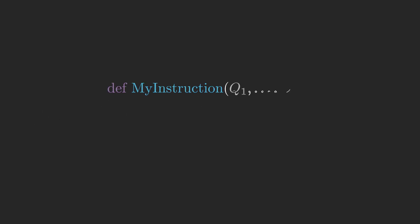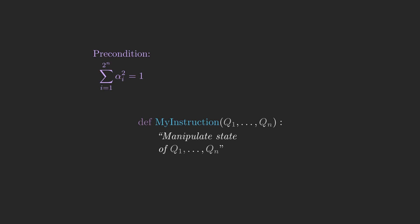A quantum instruction is an operation that takes as input n qubits in some valid superposition of their 2 to the n basic states, meaning the sum of the squares of the amplitudes is 1. The instruction manipulates them to some other valid superposition of those basic states.